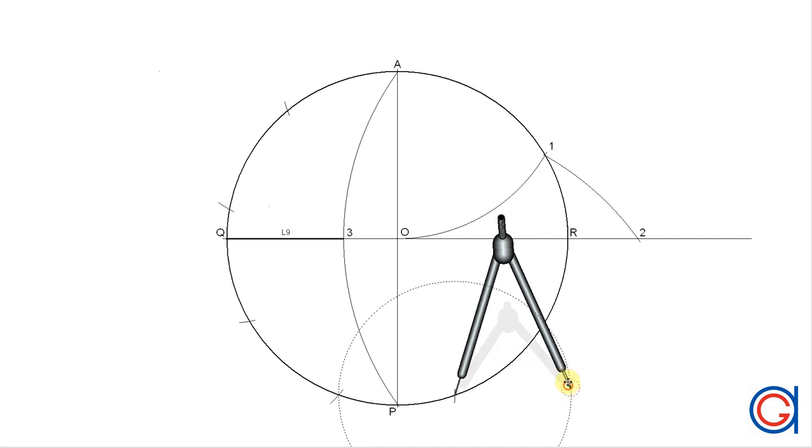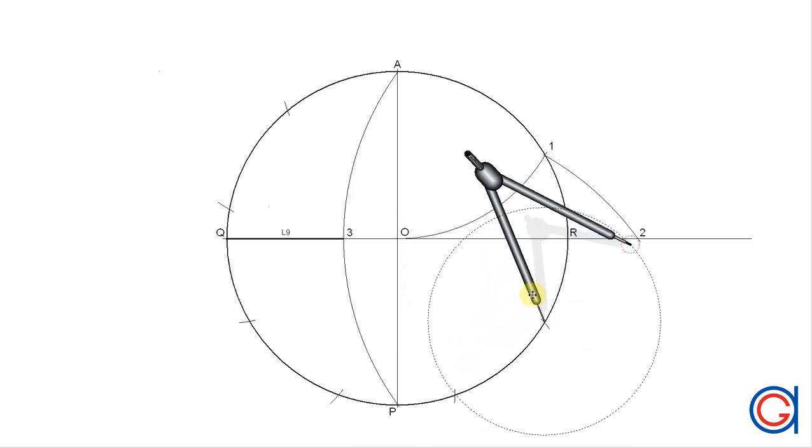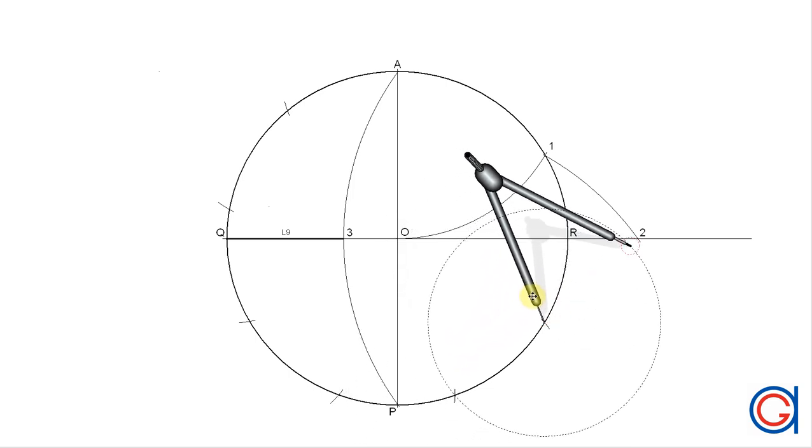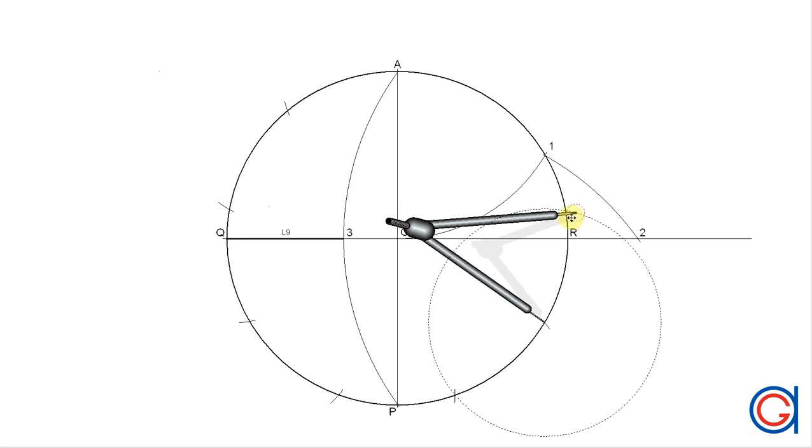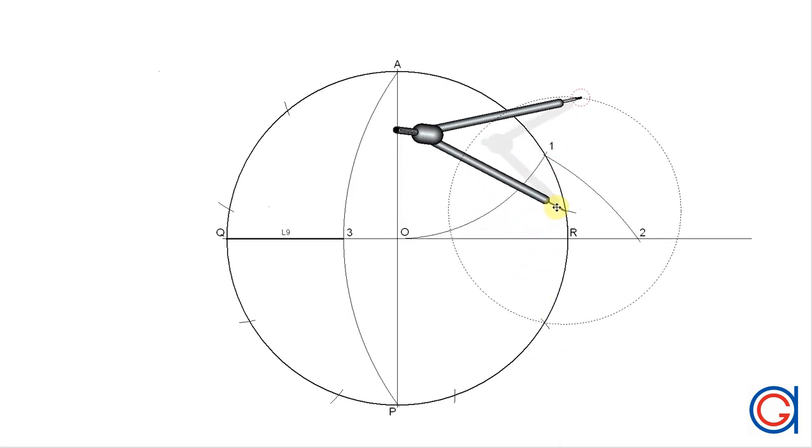Continuing the process, setting our compass on our previously scribed arc, we scribe our sixth. And again setting our compass on our previously scribed arc, we scribe an arc to the left, cutting the circumference. This is our seventh. Now we scribe our eighth arc.